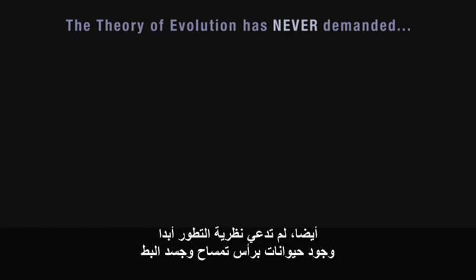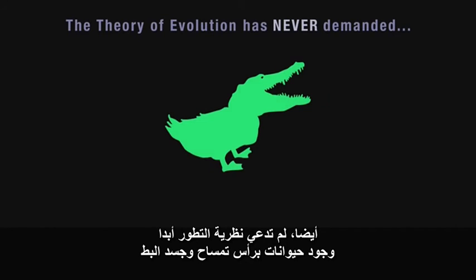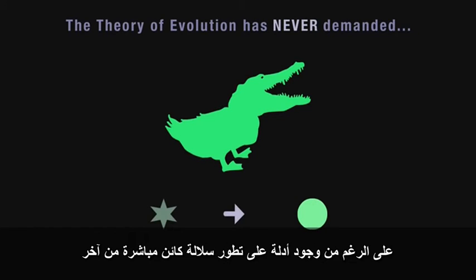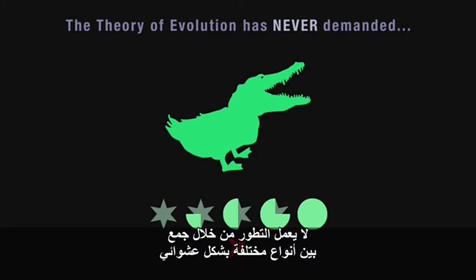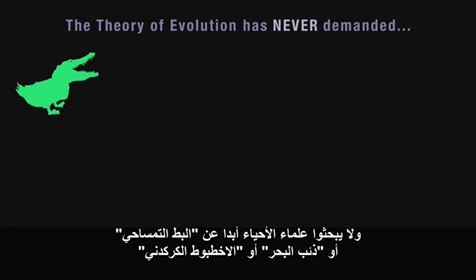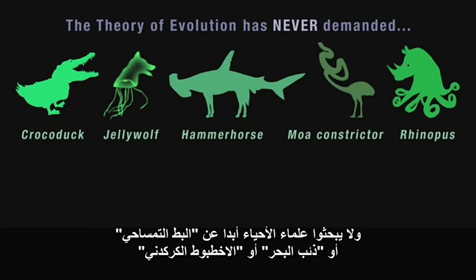The theory of evolution has never demanded the existence of animals with a crocodile's head and a duck's body. Even when there's evidence that one animal evolved directly from another, that doesn't mean the transitional forms must look like whole chunks of each animal stuck together. Evolution doesn't work by combining different species at random, and evolutionary scientists have never hunted for the Crocoduck, the Jellywolf or the Rhinopus.